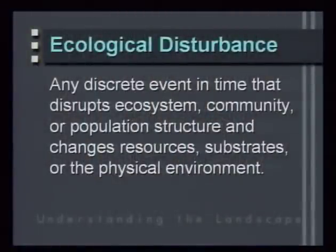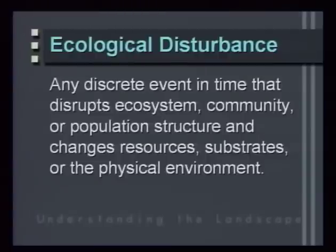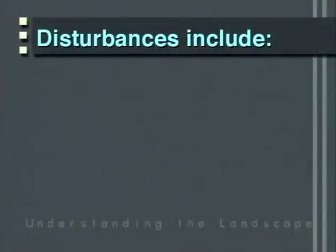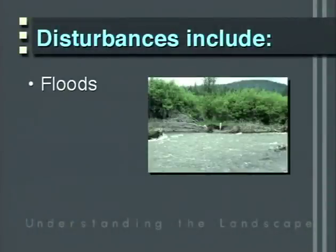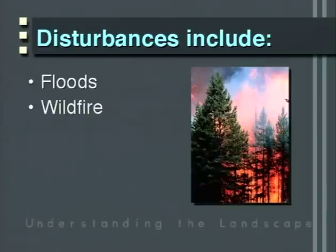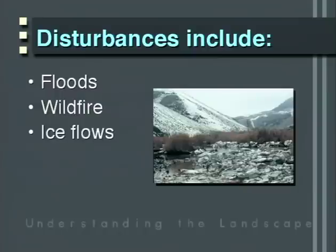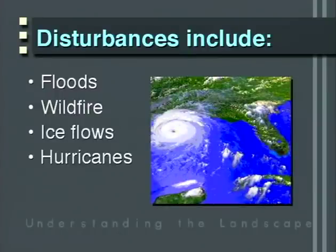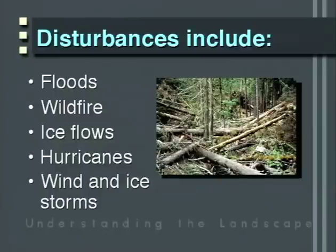What's a definition of disturbance? Basically, we might call a disturbance any discrete event in time that disrupts ecosystem, community, or population structure, and therefore changes resources, substrates, or the physical environment. Examples include floods, wildfires in virtually all terrestrial ecosystems, ice flows common in northern latitudes, hurricanes on coastal areas, and wind and ice storms.